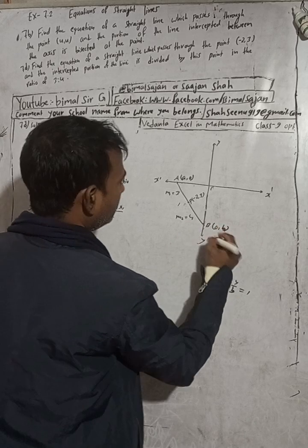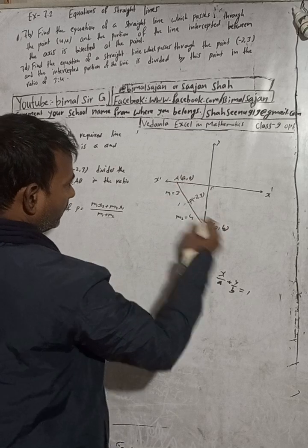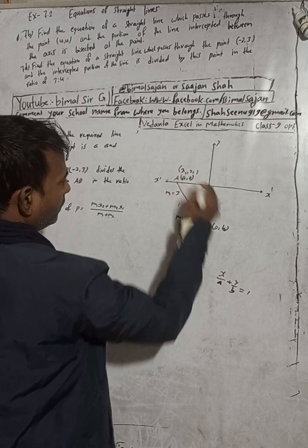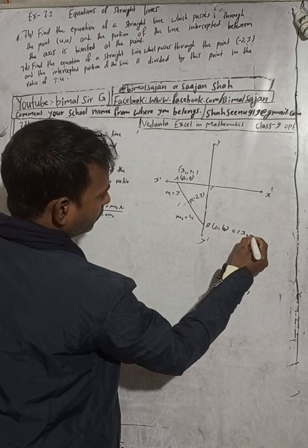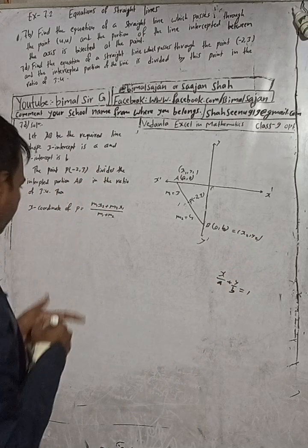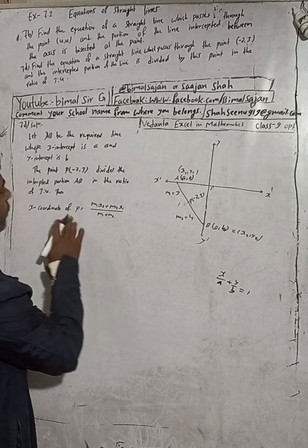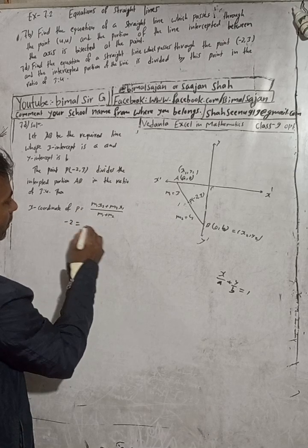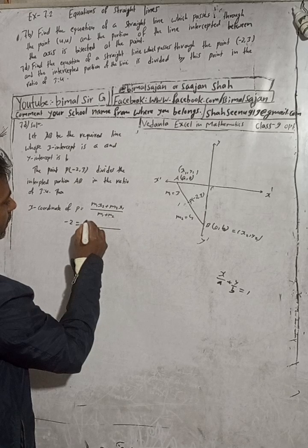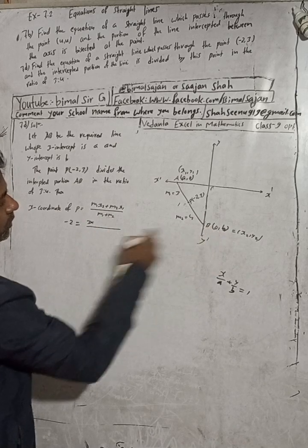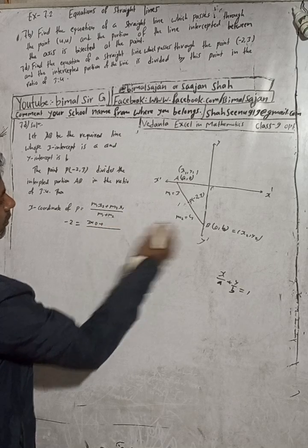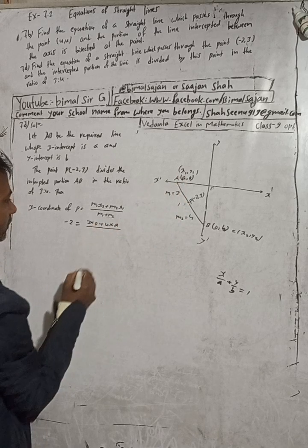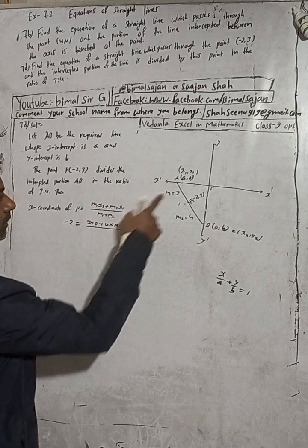So we have: x1 equals a, y1 equals 0 (point A on x-axis), x2 equals 0, y2 equals b (point B on y-axis). And m1 equals 3, m2 equals 4. The x-coordinate of P is minus 2, so: minus 2 equals m1 times x2 plus m2 times x1, divided by m1 plus m2, which is 3 plus 4 equals 7.